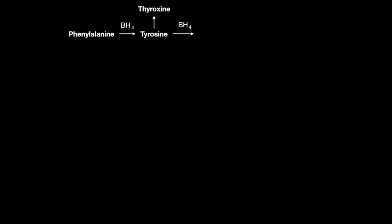For the amino acid derivatives, let's start with phenylalanine. Using an enzyme with a cofactor tetrahydrobiopterin, or BH4 for short, it is turned into tyrosine. This can become thyroxine, the hormone produced by the thyroid gland, or by using another enzyme with a cofactor BH4, DOPA can be made — the precursor to melanin and dopamine.